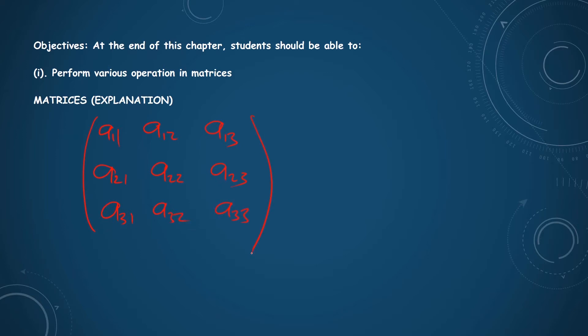Using this as an example, what makes it a rectangular array of numbers is the fact that we have rows and columns. From this illustration, this is row 1, here we have row 2, and here we have row 3. The horizontal elements are said to be in a row while those arranged vertically are said to be in a column. So this is column 2 and this is column 3. The arrangement of elements in rows and columns gives you a matrix.